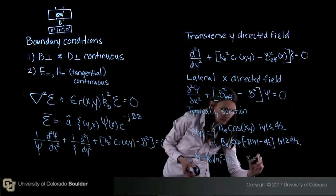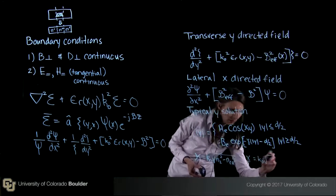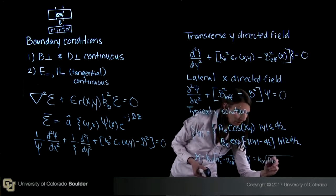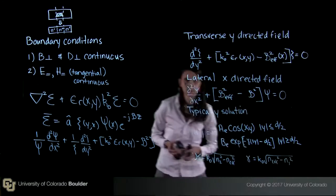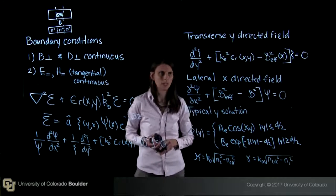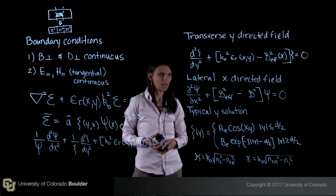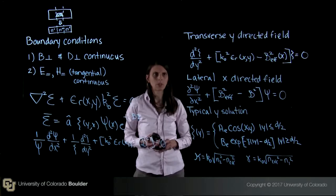And then we can also define gamma. Gamma is equal to k-naught. And then here, this becomes n effective squared minus n1 squared. And just remember that n1 and n2 are the refractive indices of the cladding and the guide layers, respectively.